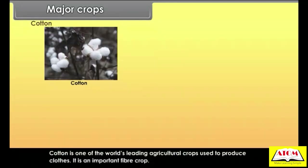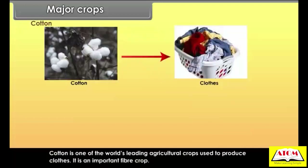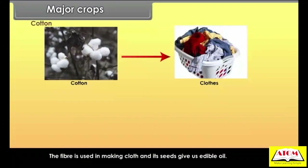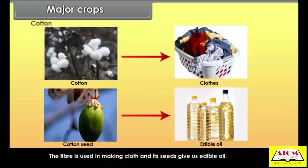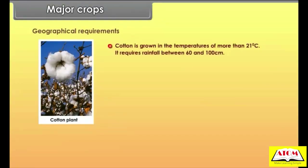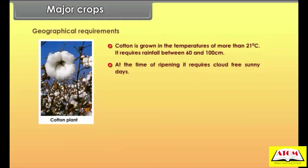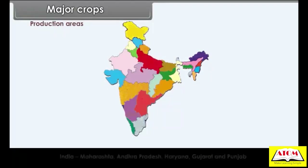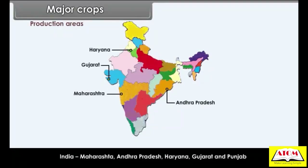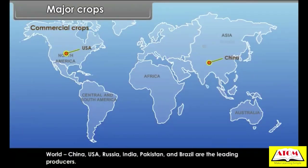Cotton is one of the world's leading agricultural crops used to produce clothes. It is an important fiber crop — the fiber is used in making cloth and its seeds give edible oil. Geographical requirements: cotton is grown in temperatures of more than 21 degrees Celsius, requires rainfall between 60 and 100 centimeters, and cloud-free sunny days at the time of ripening. Alluvial and black soils are best suited for its cultivation. Production areas — India: Maharashtra, Andhra Pradesh, Haryana, Gujarat and Punjab. World: China, USA, Russia, India, Pakistan and Brazil are the leading producers.